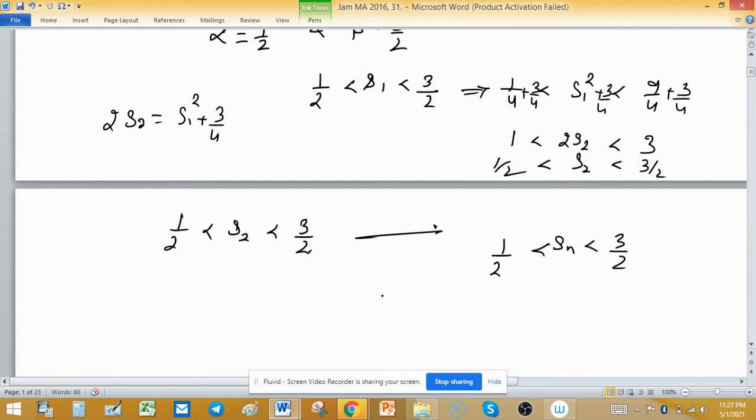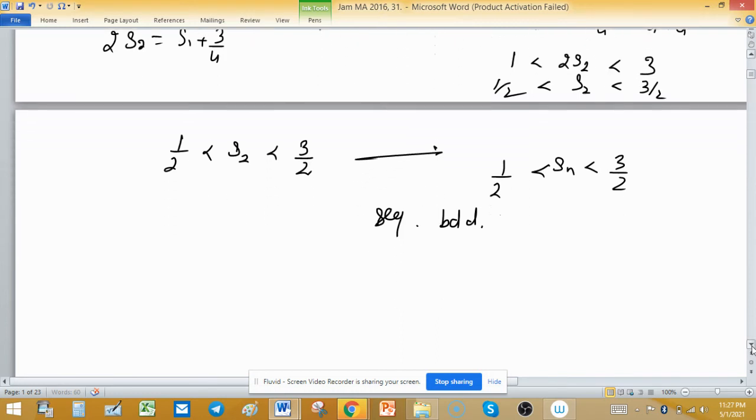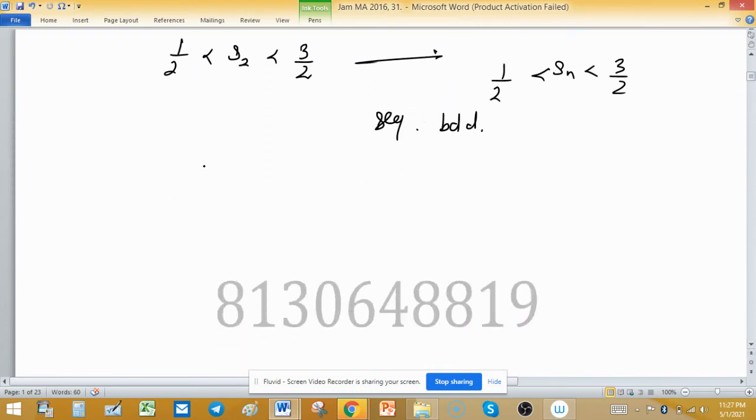This means the sequence is bounded. For monotonicity, we will seek sign of derivative and its double derivative. We can easily tell whether the sequence is increasing or decreasing. As the sequence is defined as 2 times SN plus 1 is equal to SN square plus 3 by 4.